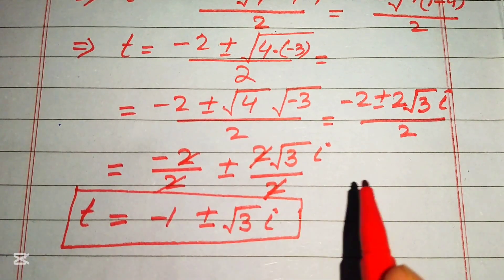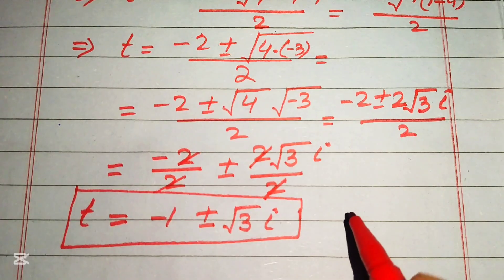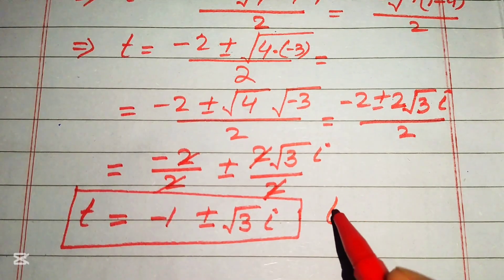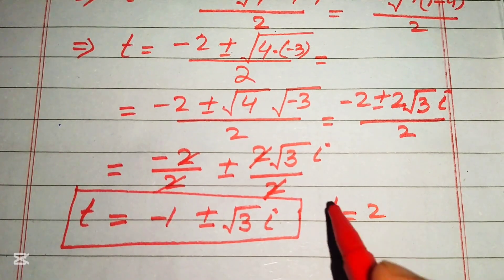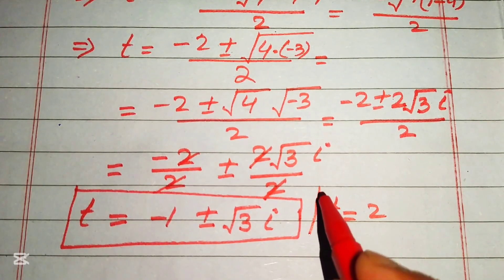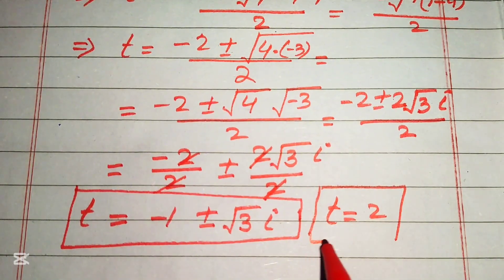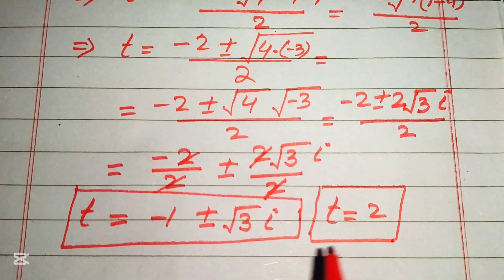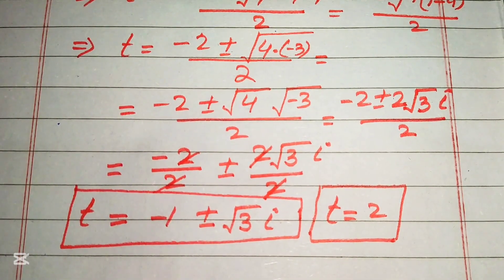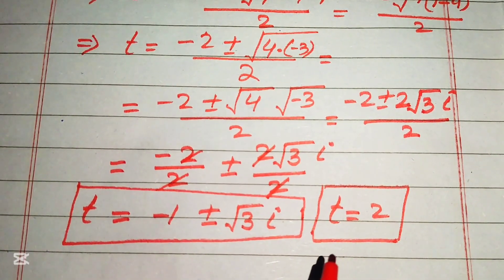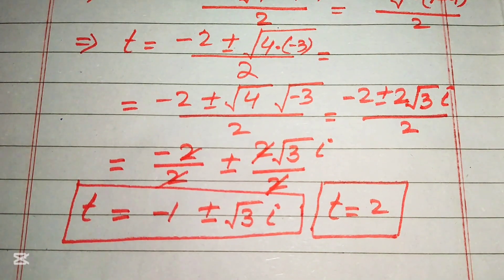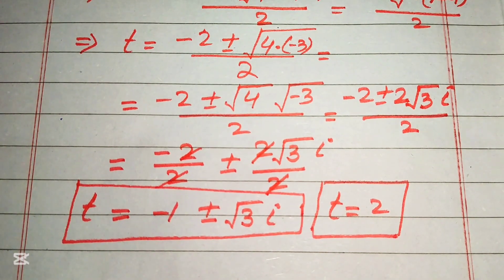We have the only real root of the given equation as t equals 2, and two complex roots t equals minus 1 plus or minus i times square root of 3. This is the final answer. Thank you so much for watching this video — please subscribe to my channel for more exciting videos.